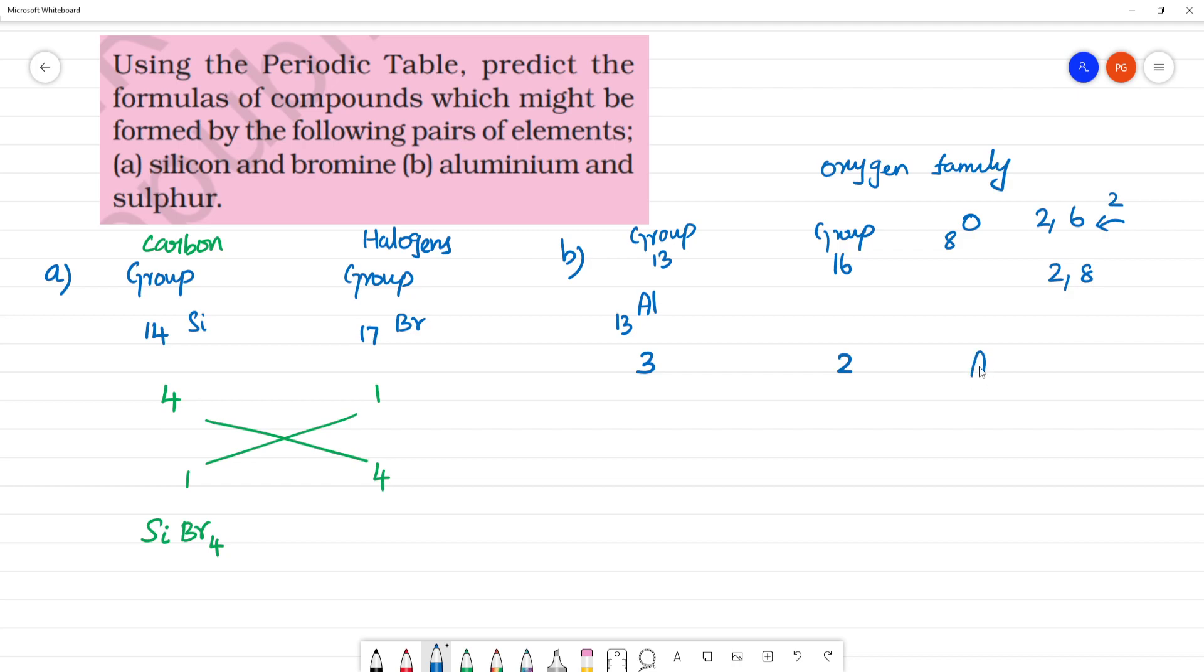Aluminum is 13. The configuration is 2, 8, 3. So, 3 electrons loose to attain 2, 8 configuration. The valency is 3.